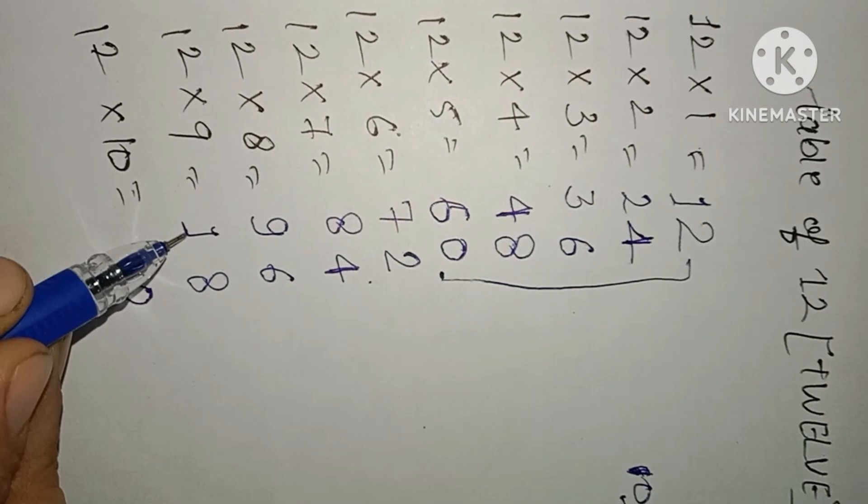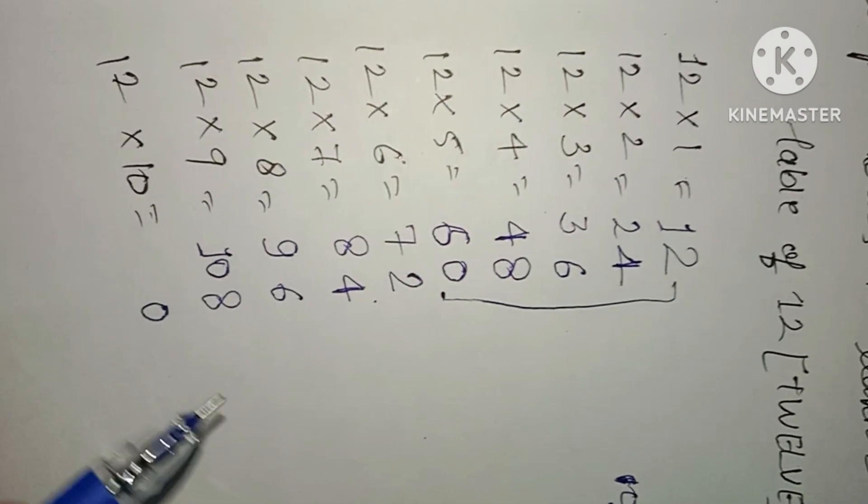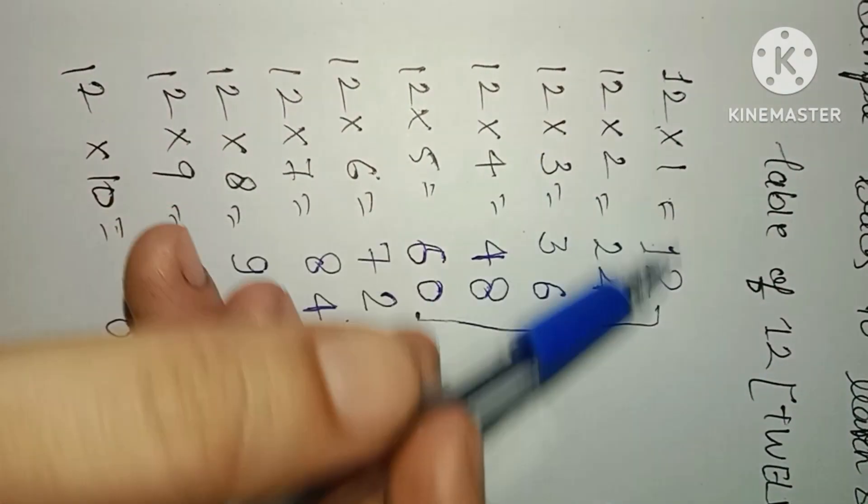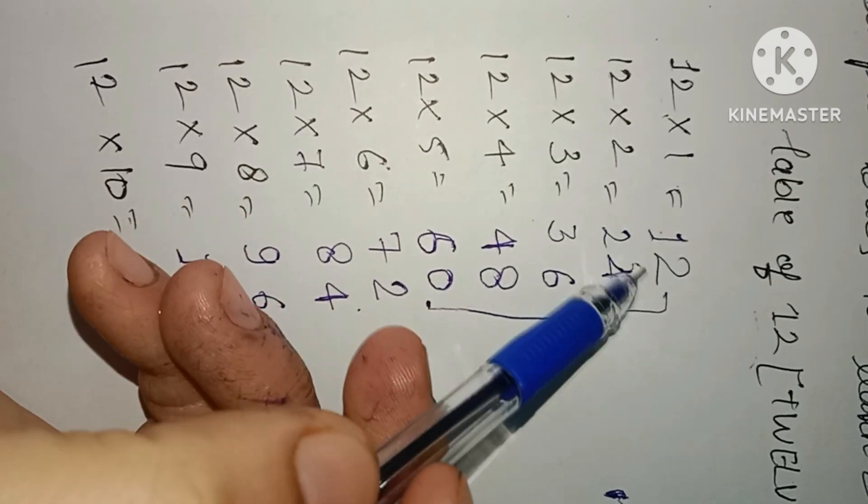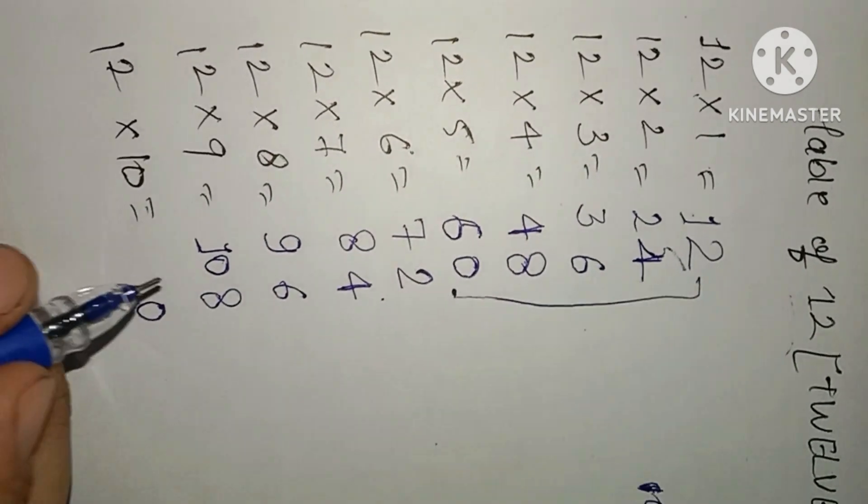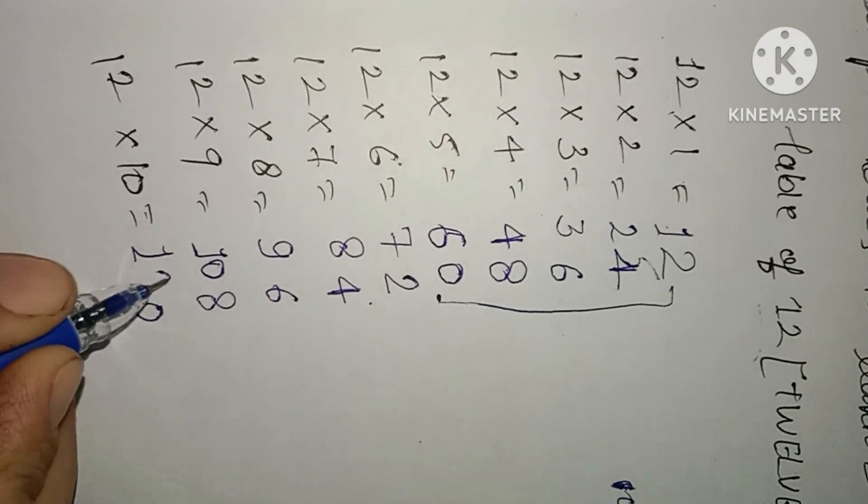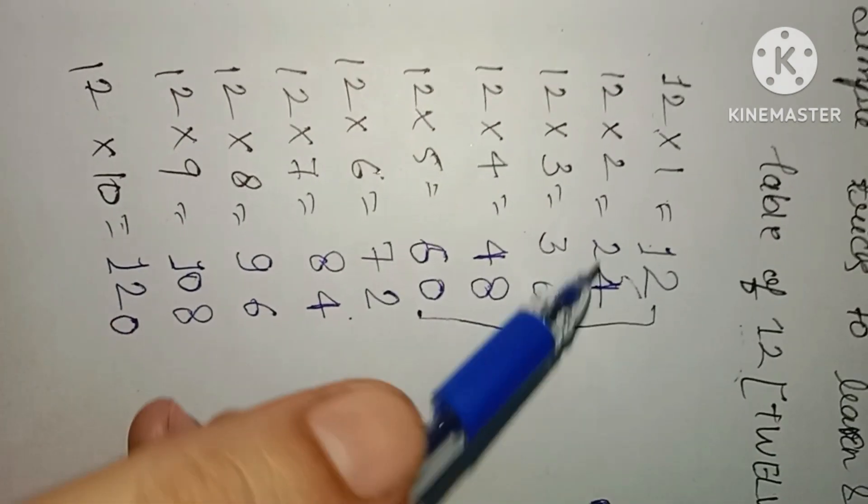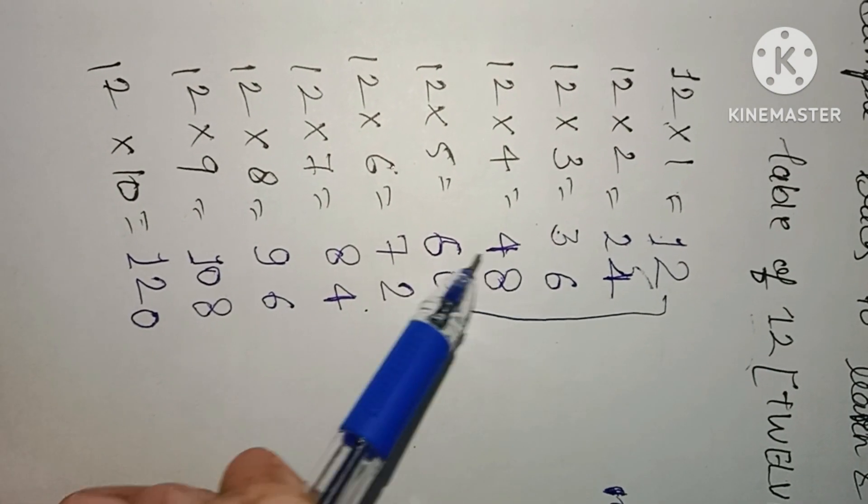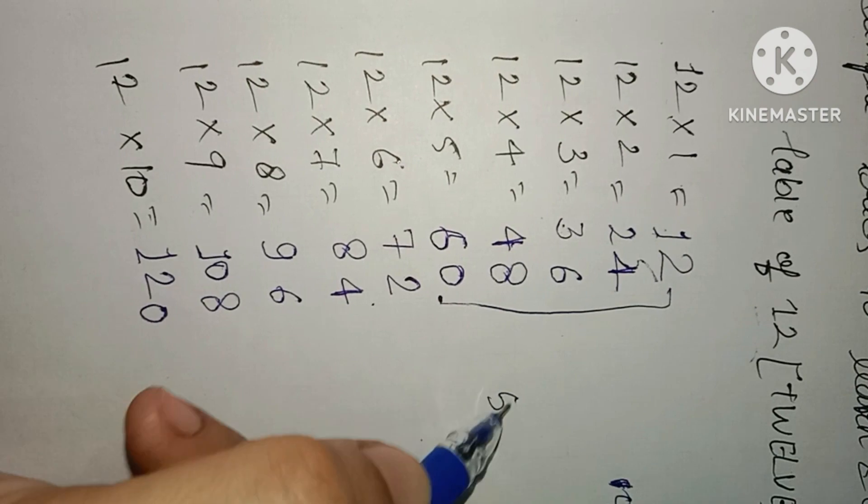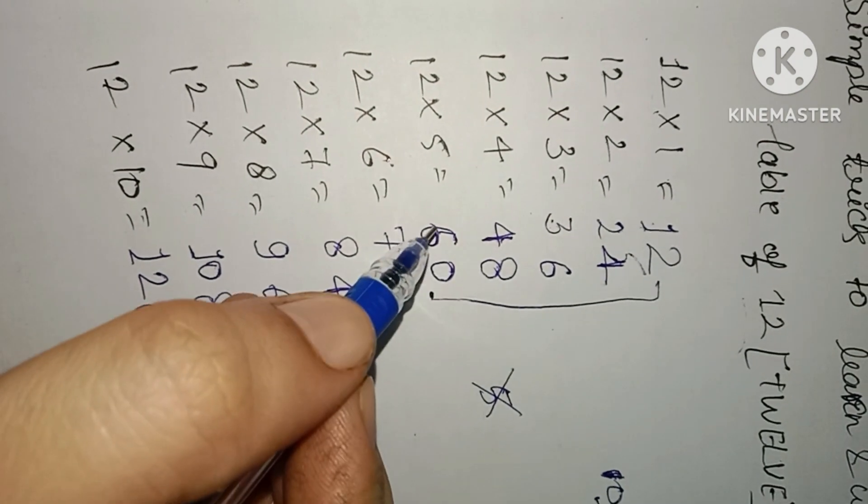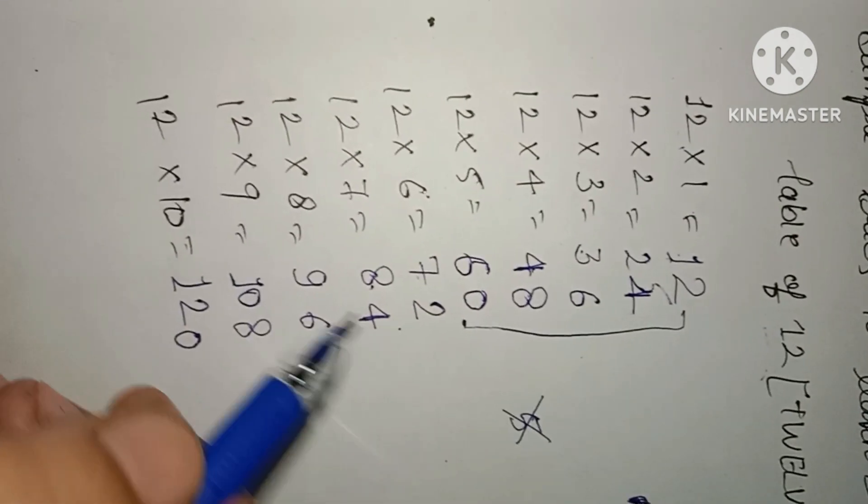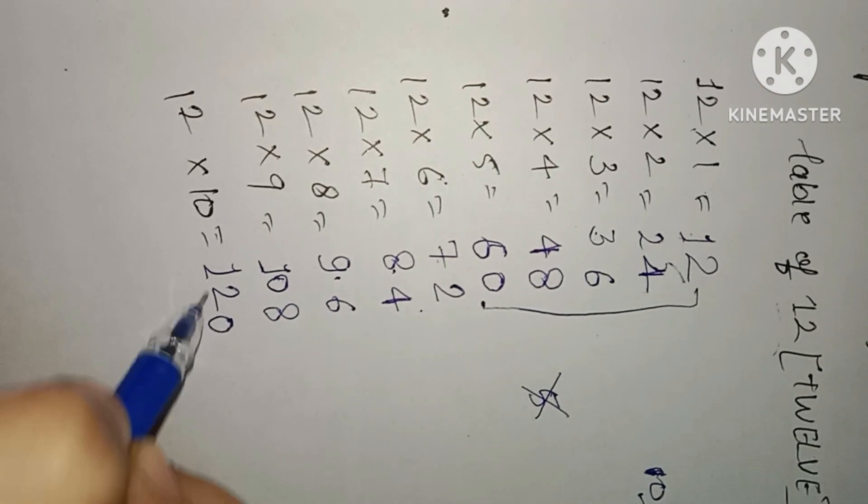Then 7, then 8, then 9, then 10. And what table are we writing? Of 12. Then at last we will write 12. Simply 1, 2, 3, 4, 6, 7, 8, 9, 10 you have to write here, nothing more. Every student knows this.